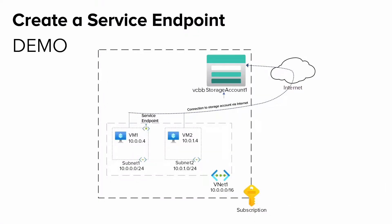But in this demo, I'm going to create a service endpoint and associate it with the subnet. What this will do is stop existing connections to the storage account via the internet and establish a direct network connection using the Microsoft Backbone Network. This means only VM1 can access the storage account and not VM2, because we are going to associate the service endpoint to subnet1 only. When you enable a service endpoint, you restrict traffic flow and enable Azure VMs to access PaaS services directly from your private IP address space.